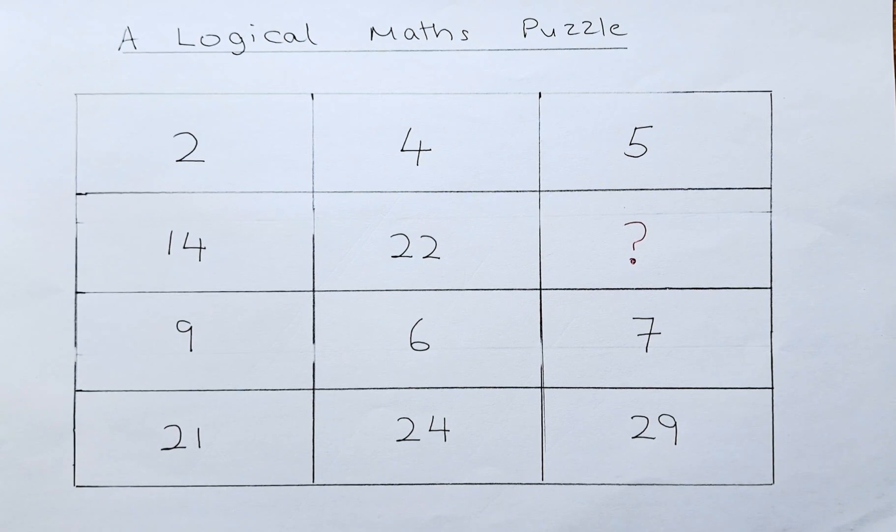The numbers in this puzzle are 2, 4, 5 on the first row, 14, 22 and a question mark on the second row.